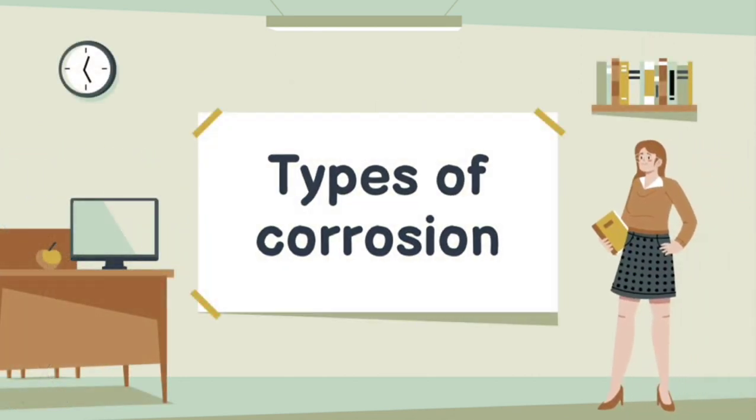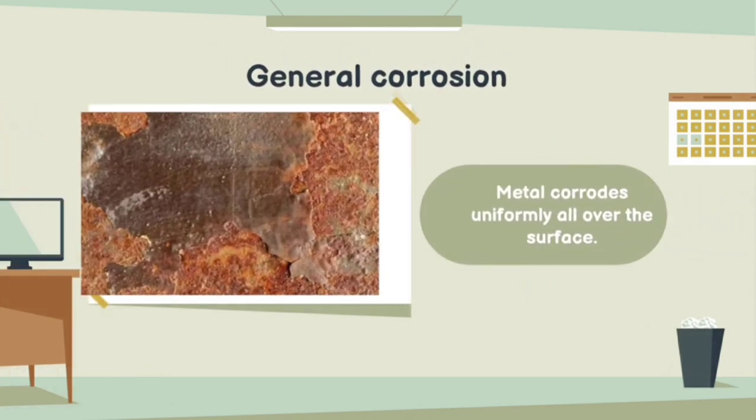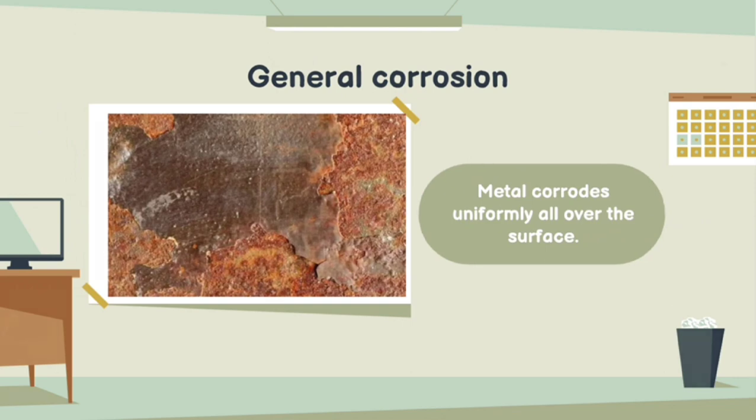Then, we have types of corrosion. Types of corrosion are divided into two, which are firstly general corrosion, and this metal is corroded uniformly all over the surface as shown in the picture here.